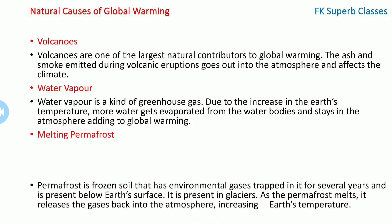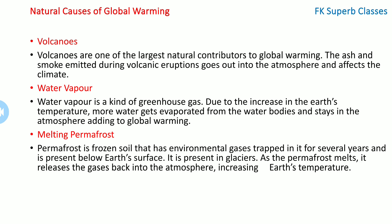Melting permafrost: permafrost is frozen soil that has environmental gases trapped in it for several years and is present below the earth's surface, found in glaciers. As the permafrost melts, it releases the trapped gases back into the atmosphere, and these gases further increase the earth's temperature.